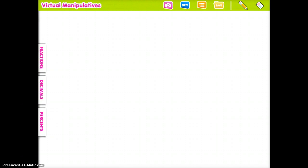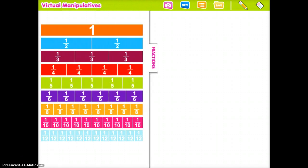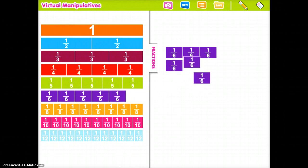If you tap the fractions, decimals, percents over on the left-hand side, you can actually play with a bunch of different things. You can drag things over, so you could visually represent what 1/6 would be by dragging six squares over and putting them together.